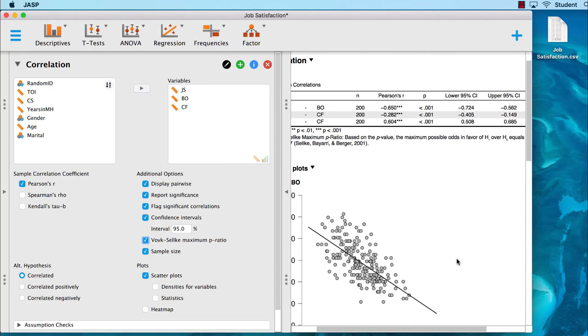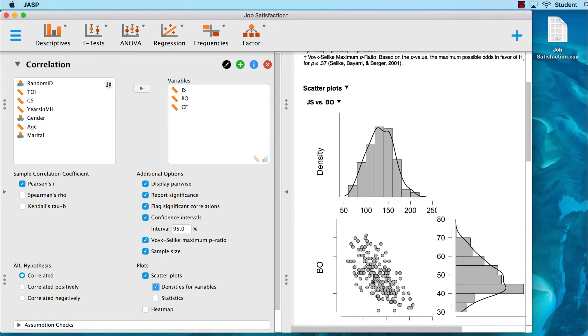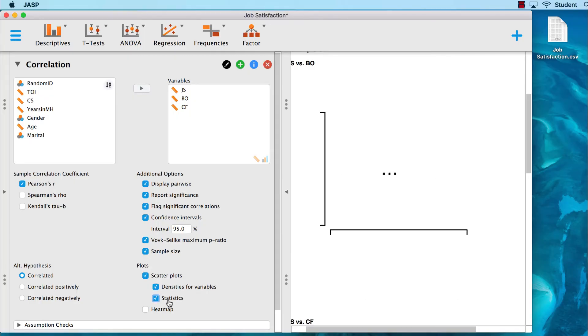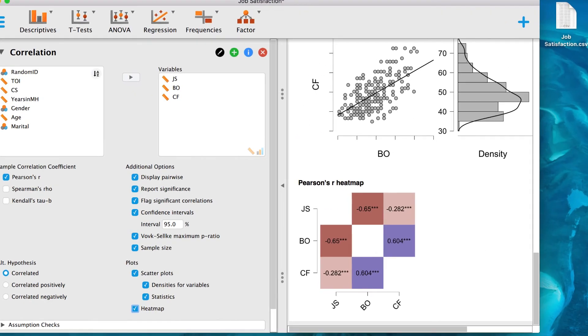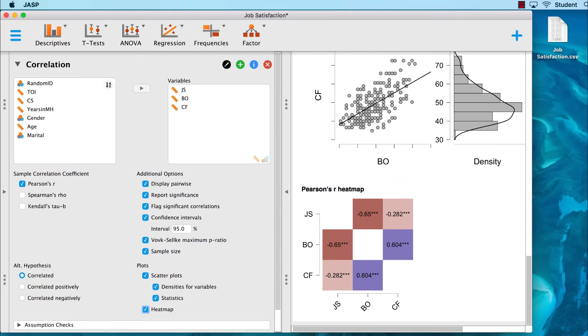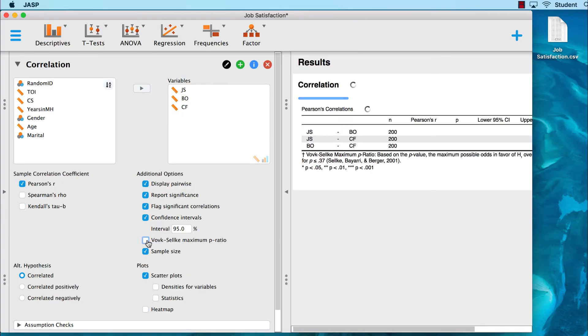We can also get more information about our plots. Add the densities for variables. This adds histograms that show us the distribution of each variable pair. The statistics option shows us the correlations for each pair. The heat map again shows us a simple correlation matrix with correlations indicated by color based upon their relative strength. Blue colors correspond to positive correlation coefficients. Red colors correspond to negative correlation coefficients. The saturation of the colors reflects the absolute value of the correlation coefficient. Look at these options to see what they do, and then when you're done, untick the additional options and go back to our original settings.